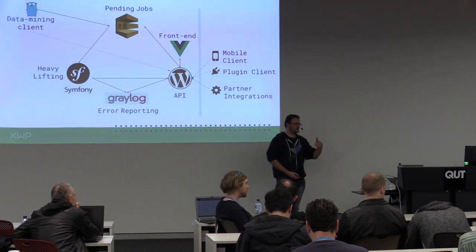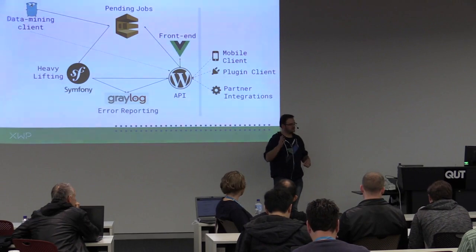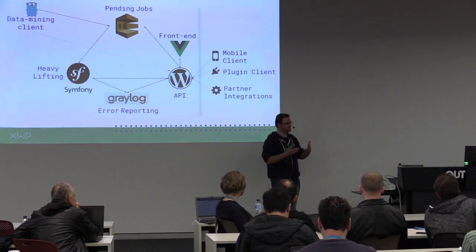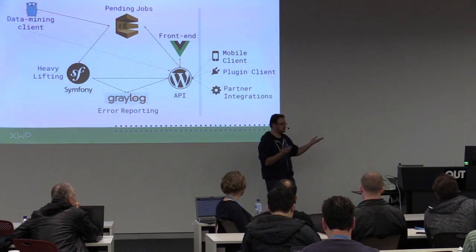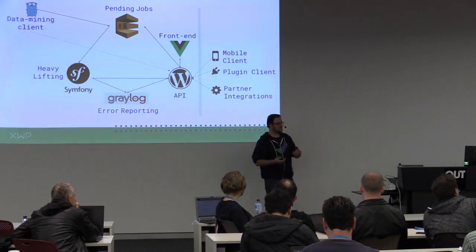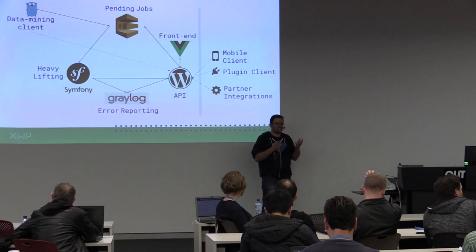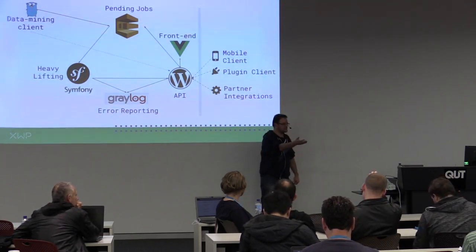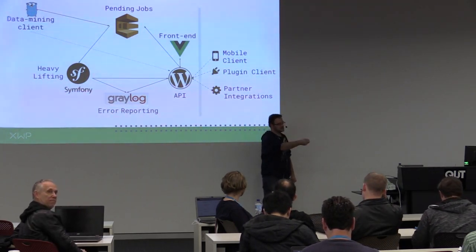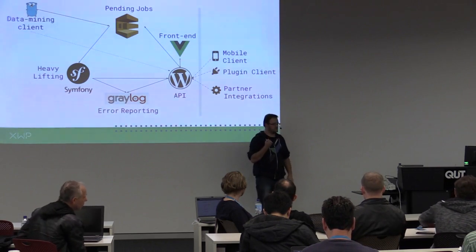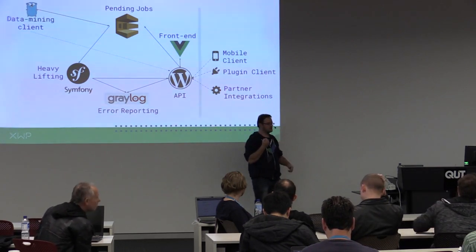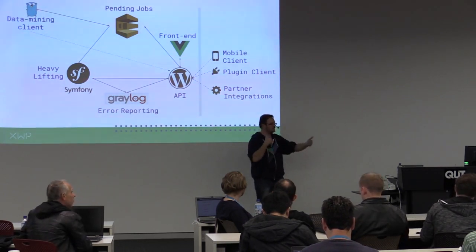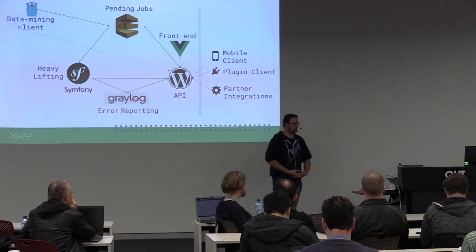The reason we use JWT and not just straight application passwords — well, that should be obvious: it's not secure. So we minimize that by saying our first request is probably going to be an insecure one, but then you get your JWT and theoretically that should be more secure.